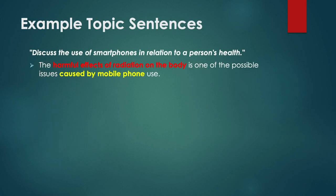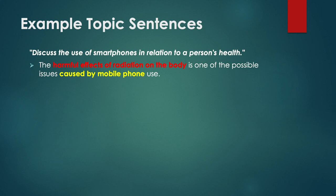Next, some example topic sentences. These examples are from an essay on smartphones. You can see the question at the top — it's a problem-solution essay about smartphones and health. The first topic sentence is from the first body paragraph, with keywords in red and yellow: 'The harmful effects of radiation on the body is one of the possible issues caused by mobile phone use.' From this topic sentence we know that the paragraph is discussing a problem of mobile phones in relation to health.